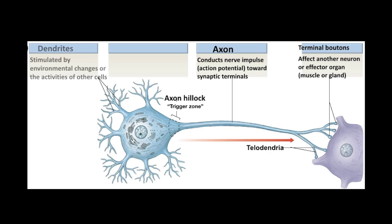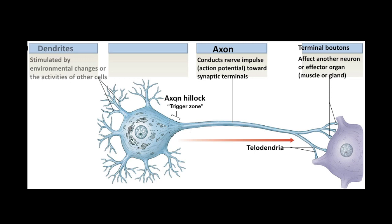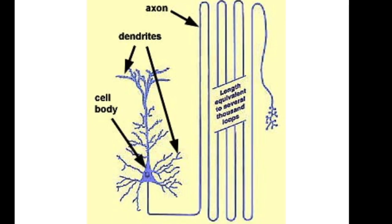At the axon terminal or bouton, the message is passed on through a chemical signal to another neuron or to an effector, which could be a muscle or a gland. Axons can extend from the cell body a great distance to innervate the target — for instance, a neuron whose cell body is in the brain may extend its axon all the way down to the lumbar region of the spinal cord, and a neuron there may extend its axon all the way to the foot. When we cover the central and peripheral nervous system, we'll see that a neuron may have its dendrites and cell body within the CNS and its axon extending out into the peripheral nervous system, or vice versa.